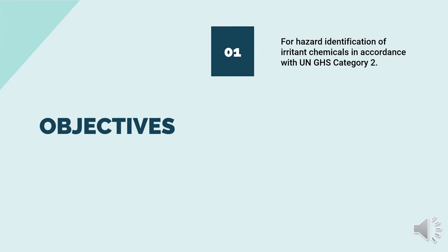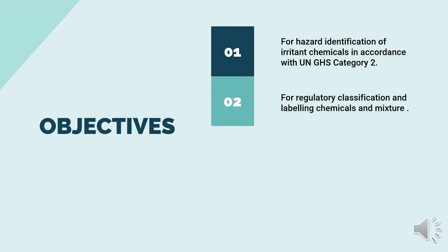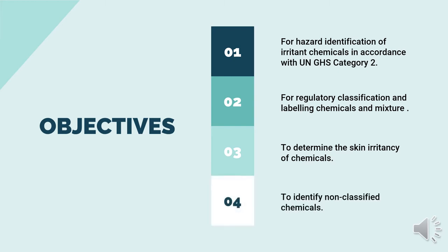Following are the objectives of this test. First, to identify the hazard of irritant chemicals in accordance with the UN Globally Harmonized System of Classification and Labeling of Chemicals, GHS, Category 2. Secondly, for regulatory classification and labelling of chemicals and mixtures. Next, to determine the skin irritancy of chemicals. And finally, to identify the non-classified chemicals.